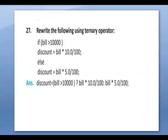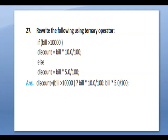Rewrite the following using a ternary operator. A ternary operator consists of three operands. The if-else statement is rewritten as: discount = (bill > 10000) ? [true calculation] : [else calculation].